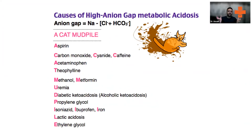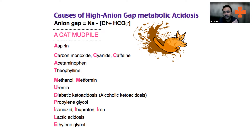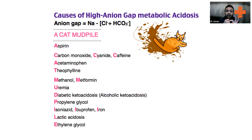What are the causes of high anion gap metabolic acidosis? DKA is a high anion gap metabolic acidosis. You calculate anion gap as: sodium minus (chloride plus bicarbonate). The mnemonic for causes is CAT MUDPILE: aspirin overdose, carbon monoxide poisoning, cyanide poisoning, paracetamol poisoning, theophylline toxicity, methanol ingestion, high metformin, uremia, diabetic ketoacidosis, propylene glycol, isoniazid, iron toxicity, lactic acidosis, and ethylene glycol.